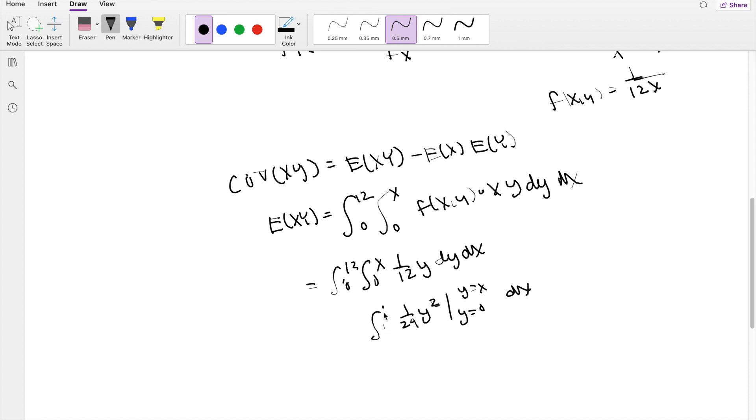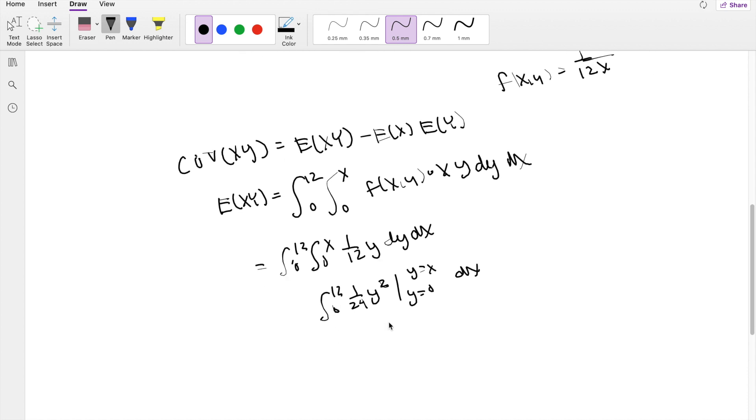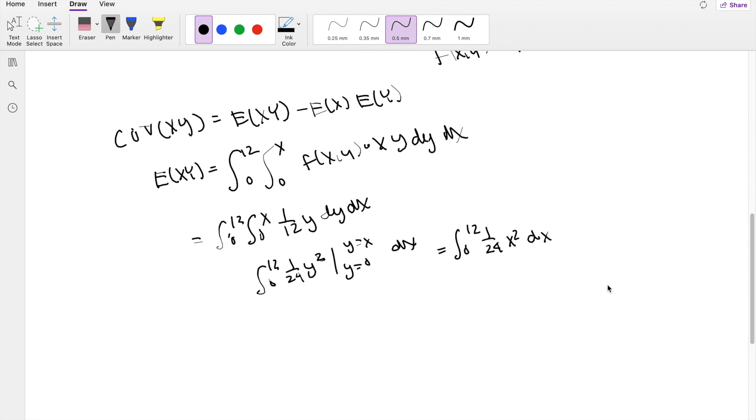The outer shell still exists, so then this is equal to, if I plug in x for y, you get 1 over 24 times x squared dx. Because the lower limit just gives you 0, then this becomes x cubed, taking the antiderivative, 1 over 72, where x is going from 0 to 12. So then this is equal to 12 cubed over 72, which is equal to 24.